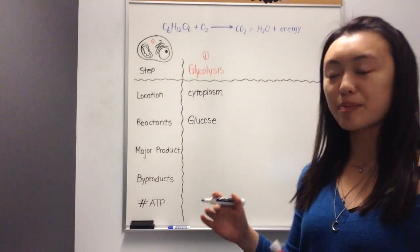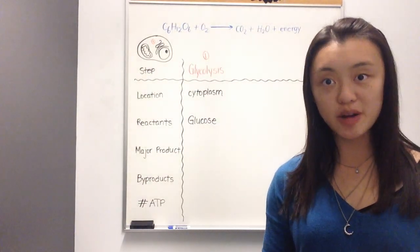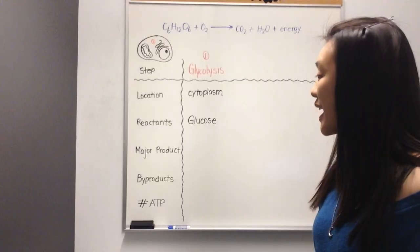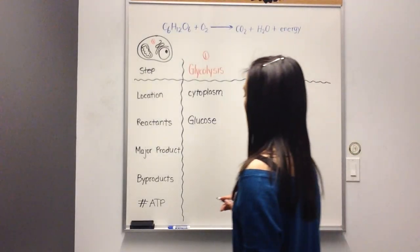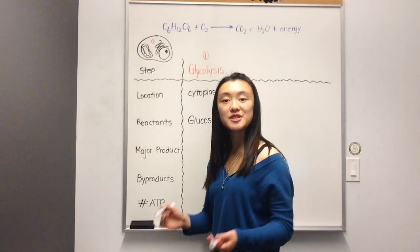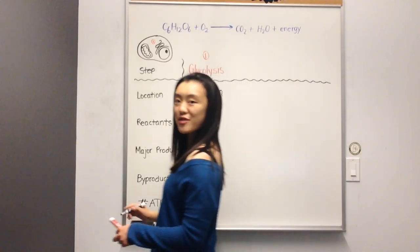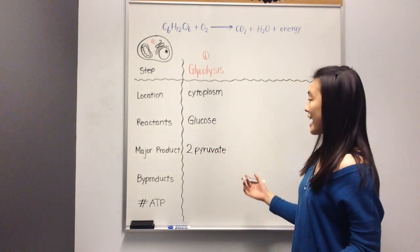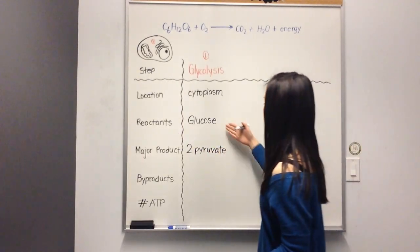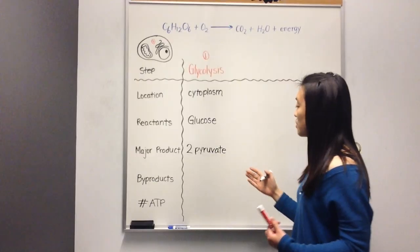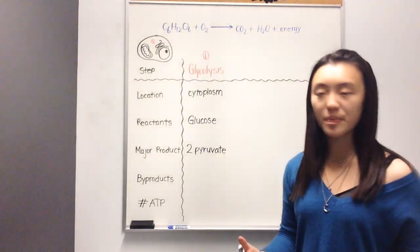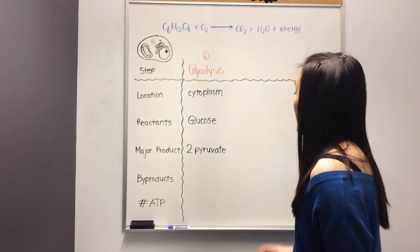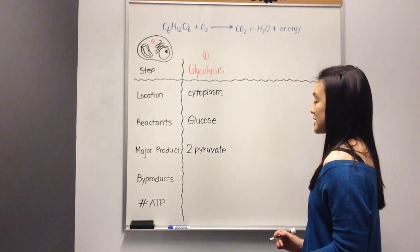The major product of glycolysis is a molecule known as pyruvate. While glucose is a molecule with six carbons, pyruvate only has three carbons, which means that a six-carbon glucose can be broken down into two three-carbon pyruvate molecules. And during this reaction, in which glucose becomes two molecules of pyruvate, there are no really major byproducts that we produce.